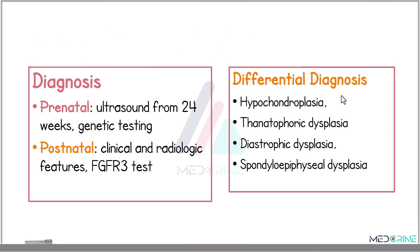The diagnosis of achondroplasia can be made either prenatally or postnatally. Prenatally, an ultrasound from the second trimester with genetic confirmation via amniocentesis can be used. Postnatally, diagnosis is typically based on clinical features, radiologic findings, and confirmatory FGFR3 gene testing. The differential diagnosis includes skeletal dysplasias such as hypochondroplasia, thanatophoric dysplasia, and diastrophic dysplasia.